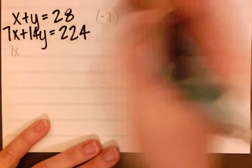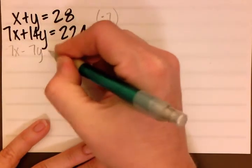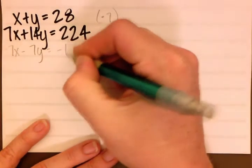And when we do, we get negative 7x minus 7y equals negative 196.